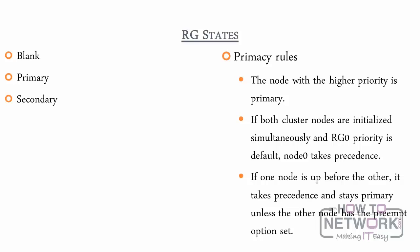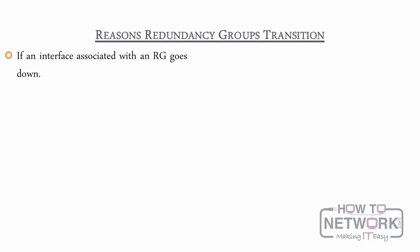There are several ways for an RG to transition. The most common way is if an interface associated with an RG goes down. Each interface associated with an RG has a weight. If the weight of all interfaces is over the tolerance — the default is 255 — a failover is triggered. The tolerance is adjusted downwards by the weight of an interface until the threshold reaches zero. When a failover occurs, all objects within that RG failover to the other node.